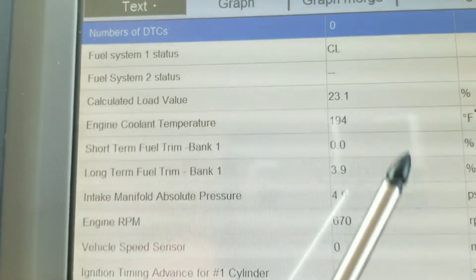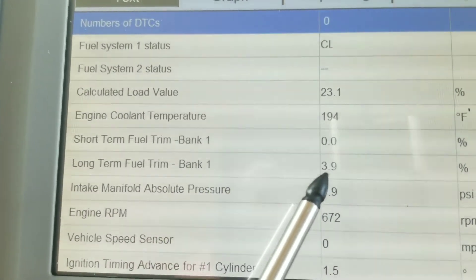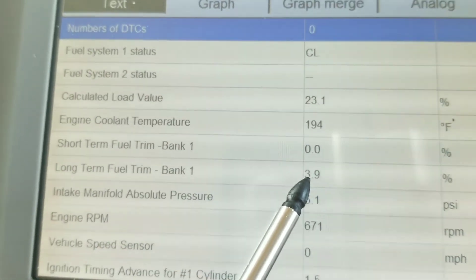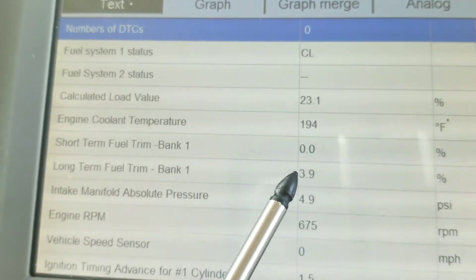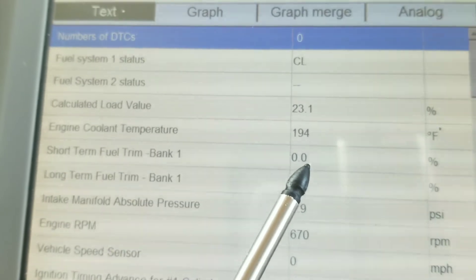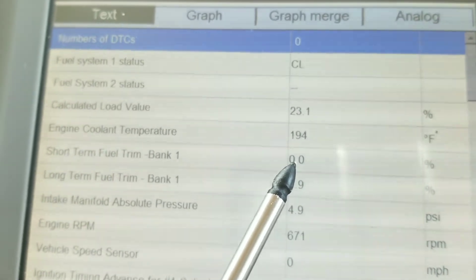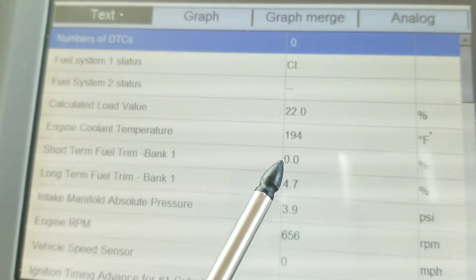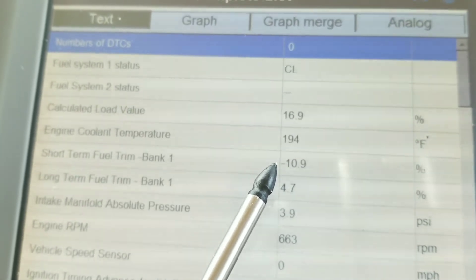If you have a leaking injector though, things get a little bit hairy because with a leaking injector this could go into the negative. So first your short trim will go into the negative and this can go up to 25% to try to correct.